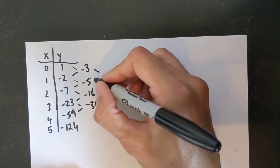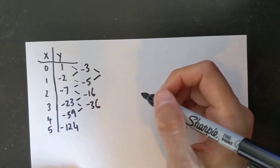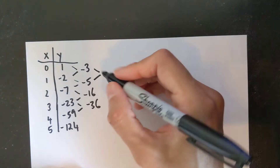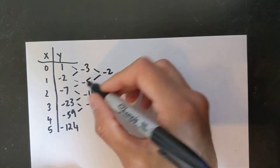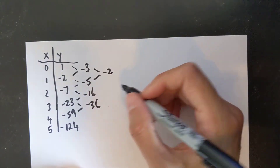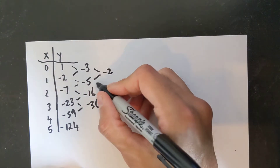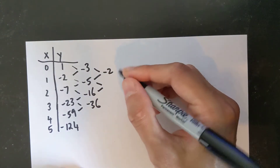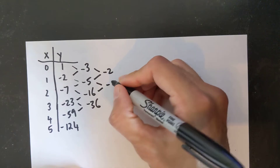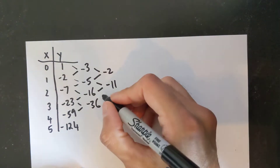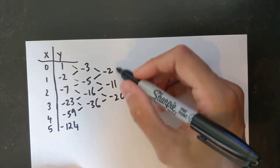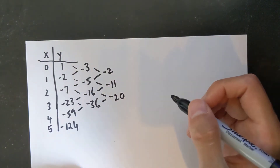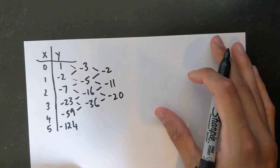Let's try the second differences to test whether it's quadratic. So that's negative 5 minus negative 3, which is negative 2. Then negative 11. Negative 20. My second differences are not the same either, so it's not quadratic.